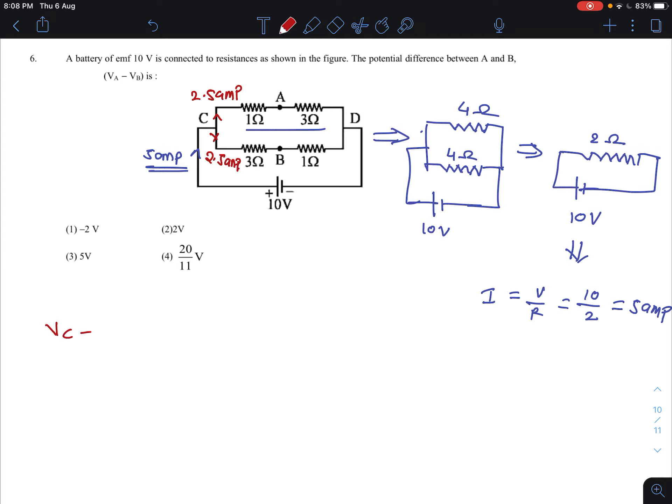Now let's do VC minus VA. Potential drop across this 1 ohm resistance. VC minus VA, higher potential to lower potential. VC minus VB, higher potential to lower potential. So VC minus VA, V equals IR. What will the potential drop across this? IR, that is 2.5 into 1. VC minus VB, 2.5 into 3. So let's do this equation 1 and 2.